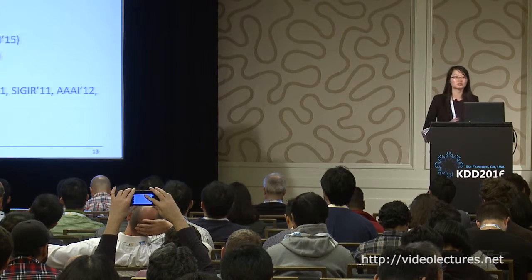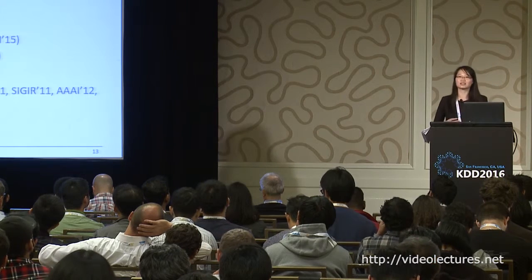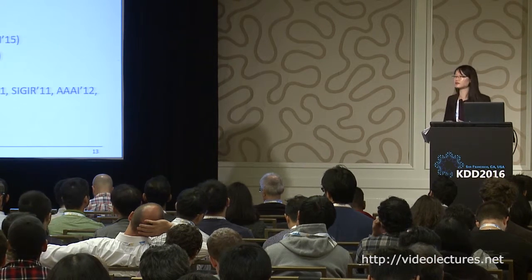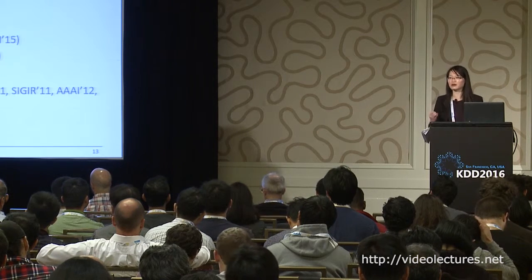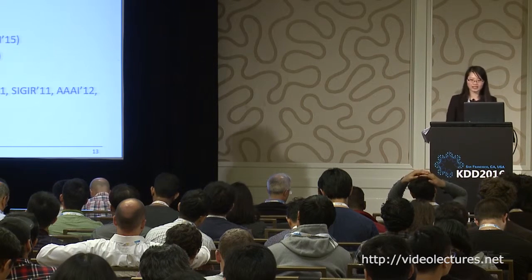Recently, a lot of efforts have been made to explore the influence of social network and geographical position. For instance, for modeling the social network, some methods propose to place social regularization terms on learning users' preferences. And for modeling geographical inference, some methods propose to study one single geographical factor such as distance. However, few of these methods can incorporate the influence of geographically close users on each other's check-in activities into metric factorization, and few of these models can address the user cold-start problem.